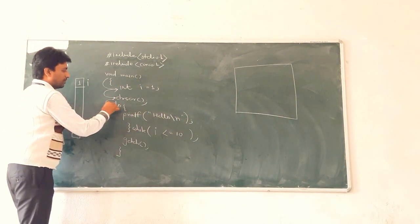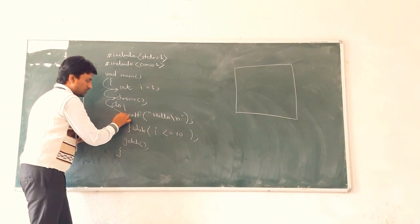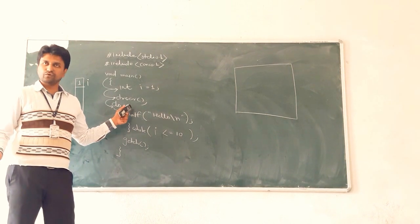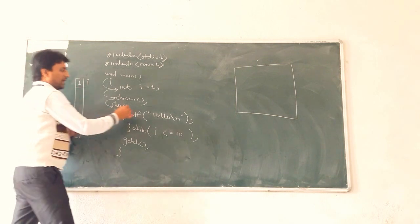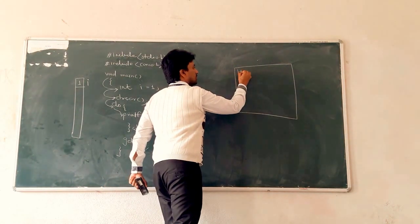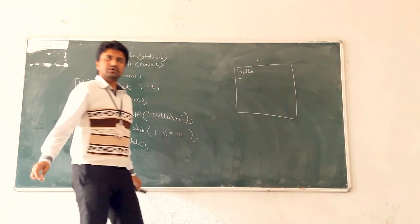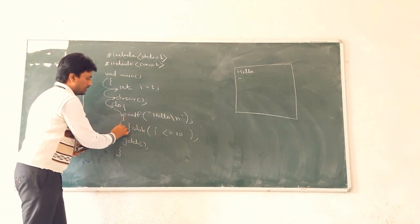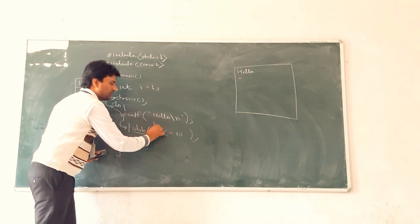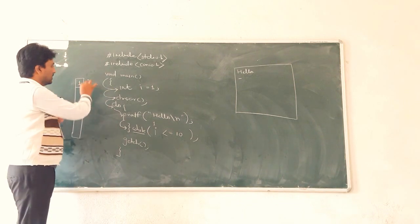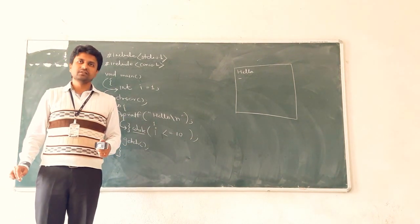What is the first line? Print hello on the console — printed, and the newline means cursor goes to the next line. Next statement is while. What is the condition? What is the value of i? It is 1, taken from RAM. 1 less than or equal to 10 — condition is true, so again entry to the do-while loop.